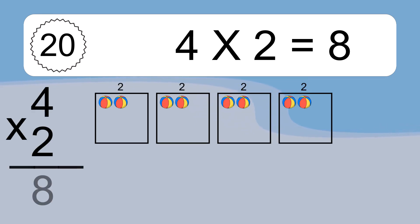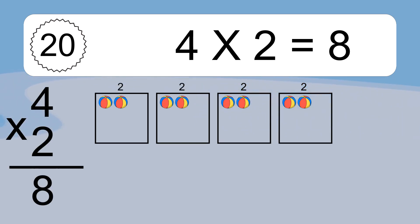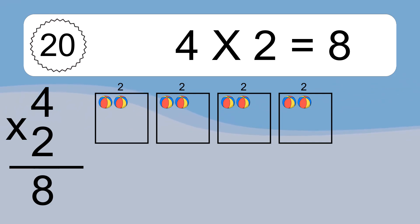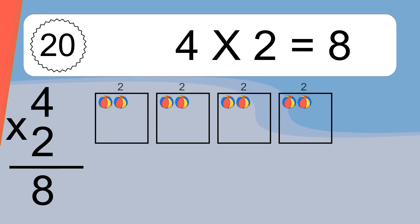We have 4 boxes, and each box has 2 colorful balls inside. If you count all the balls in all the boxes together, you will have 4 times 2 balls. This equals 8 balls.